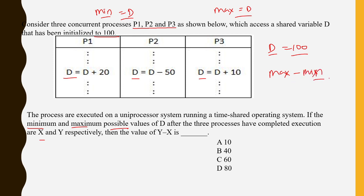Now first of all, go for the minimum possible value. How can I get the minimum possible value? My initial value was 100, so definitely when I decrease it, when it will be decremented, then I get the minimum.